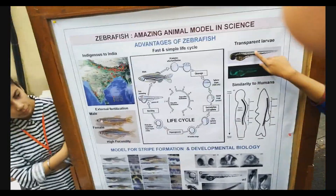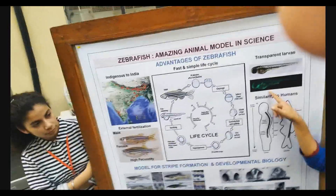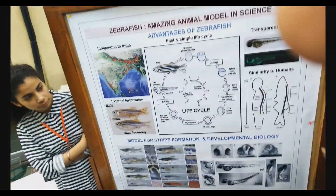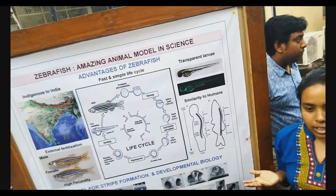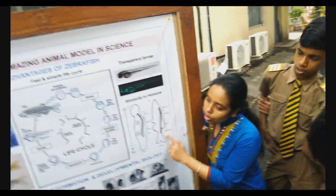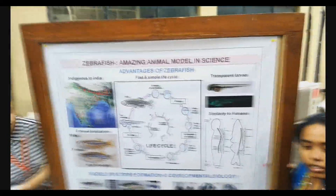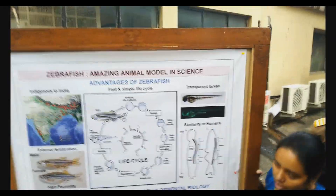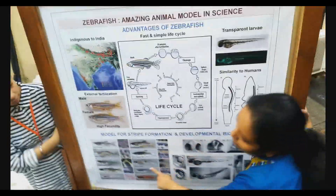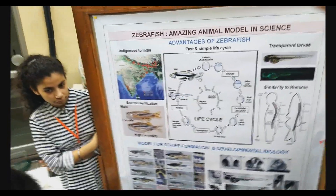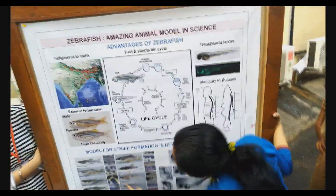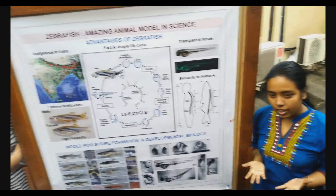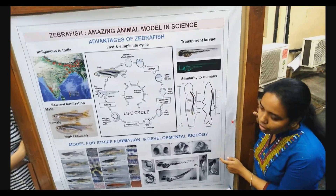Zebrafish is actually very good for studying development. The larvae you get are transparent, so you can immediately see all the organs inside them. There are different kinds of stripes and patterns you can see in zebrafish — some look like a leopard or a python. This is important for understanding how animals develop a body pattern. Zebrafish is very useful for studying various human diseases.